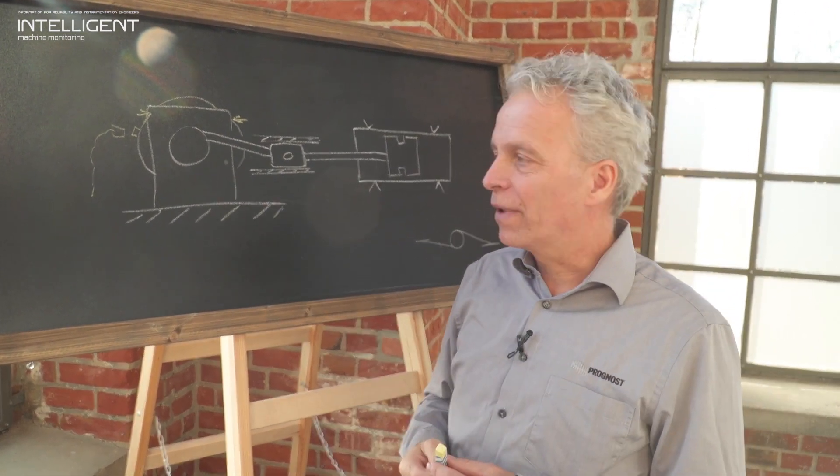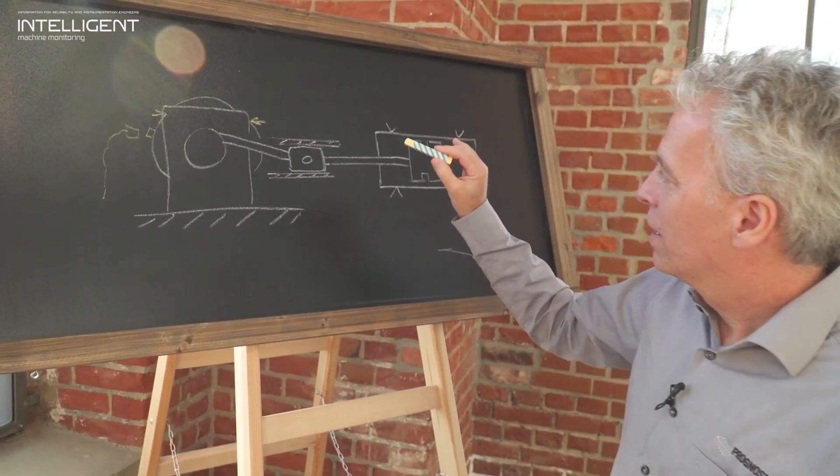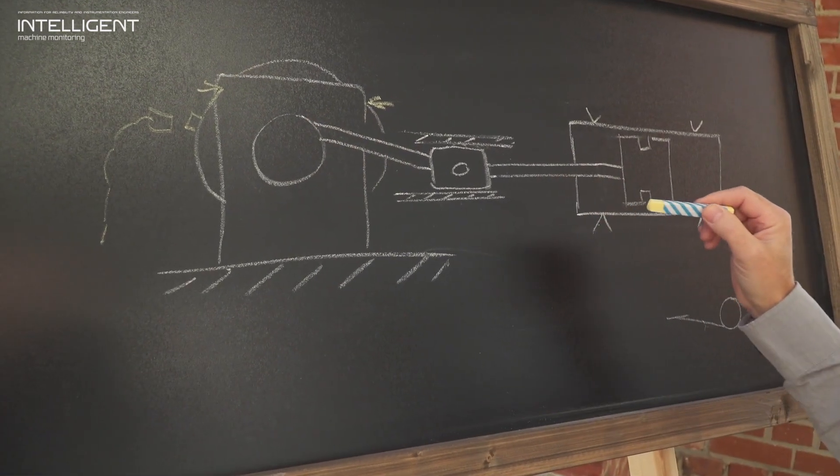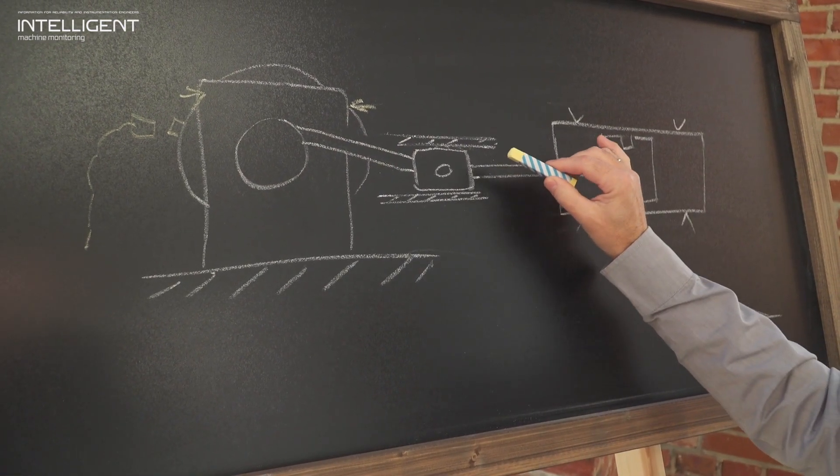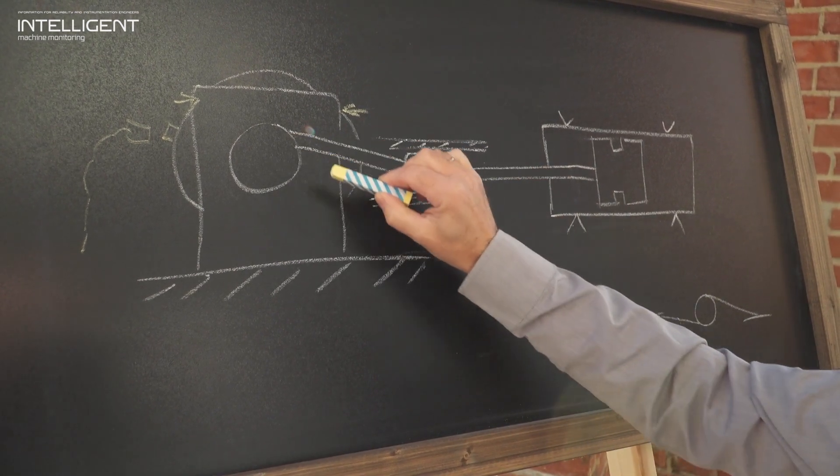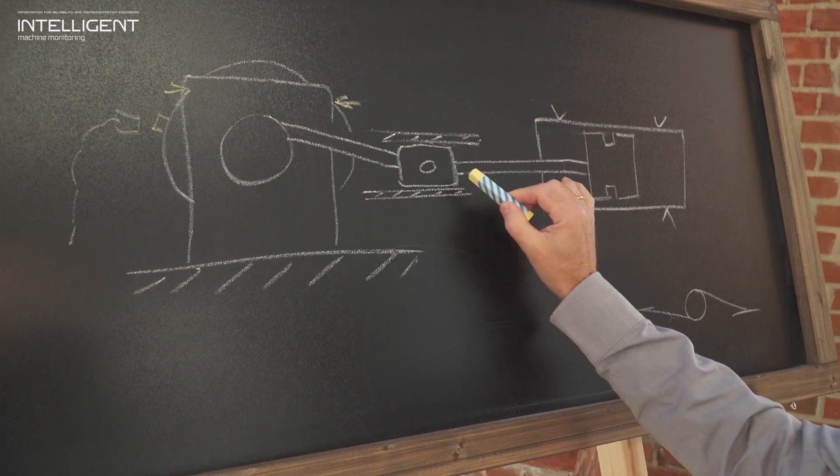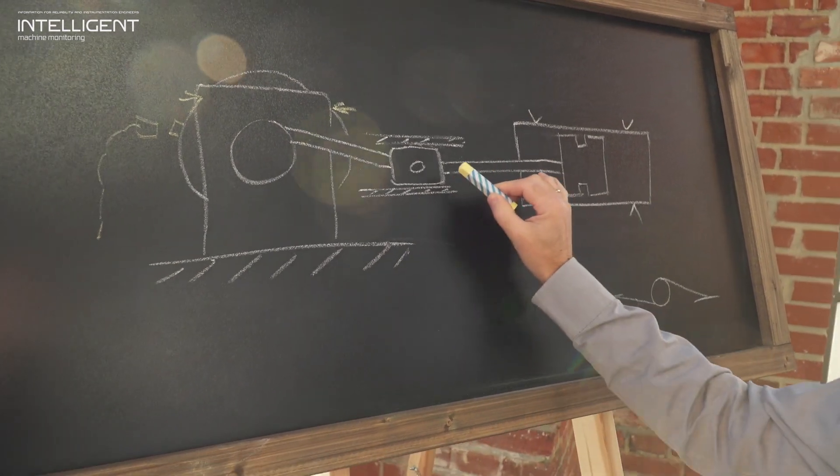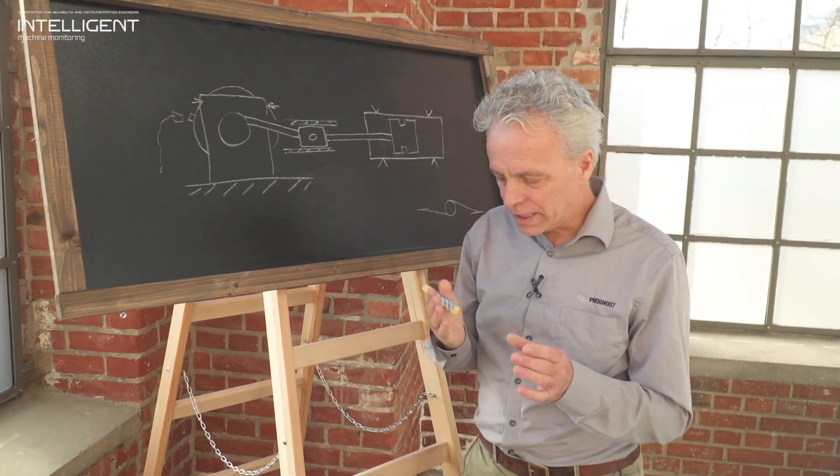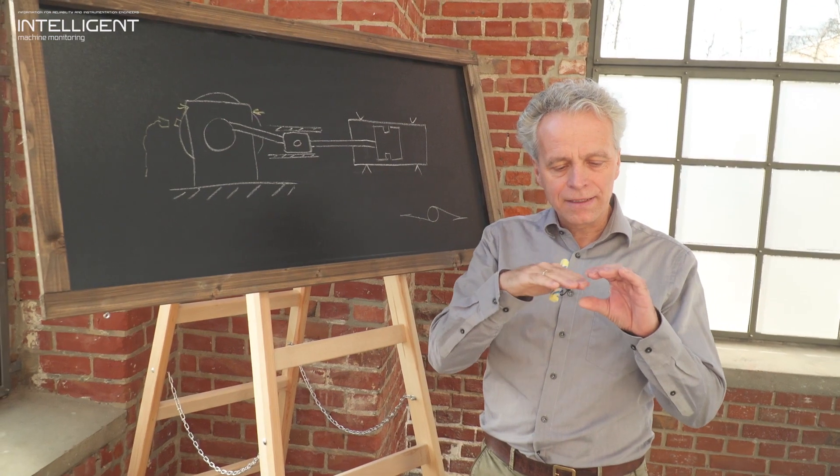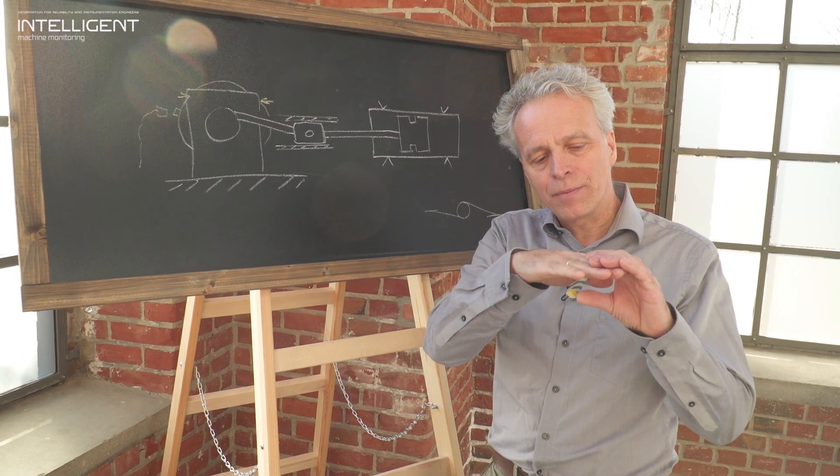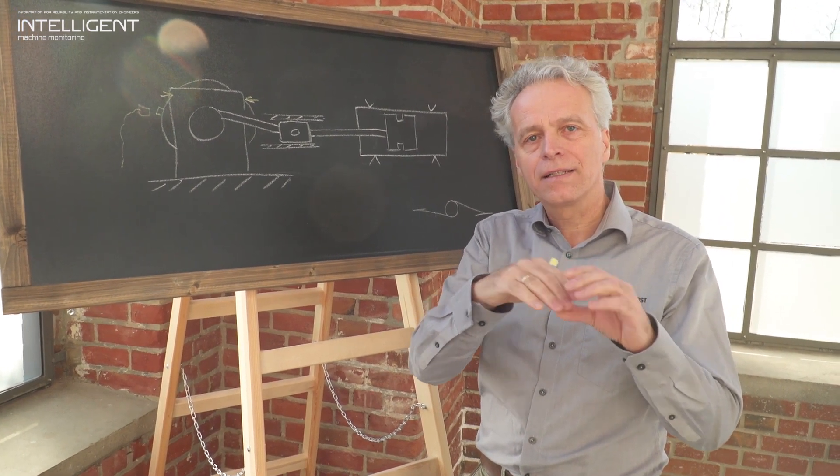Here we see the crosshead. The crosshead is one of the most critical components in the drivetrain of a reciprocating compressor because it turns the rotating movement of the crankshaft into a reciprocating movement of the piston rod and the pistons. This crosshead is supposed to move like this inside the crosshead guide.